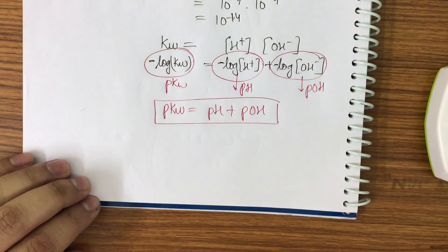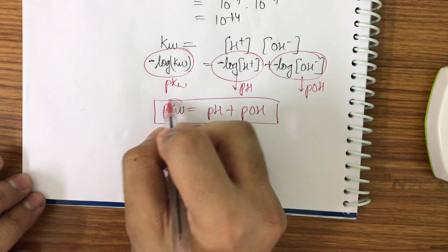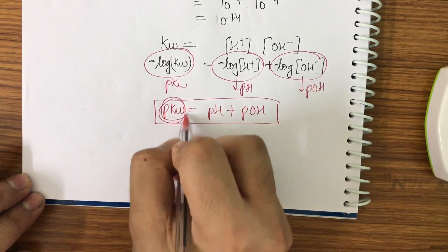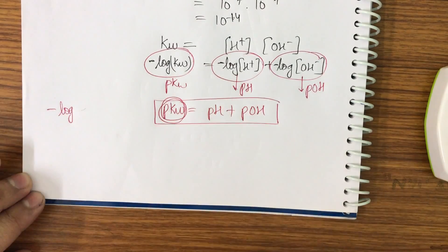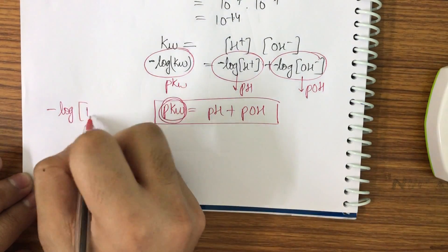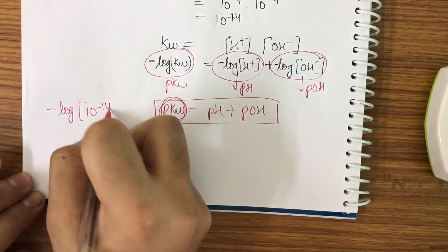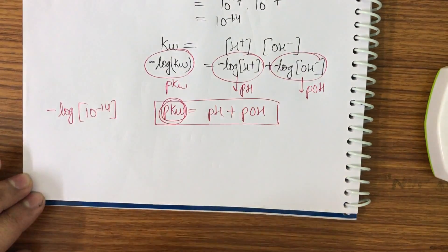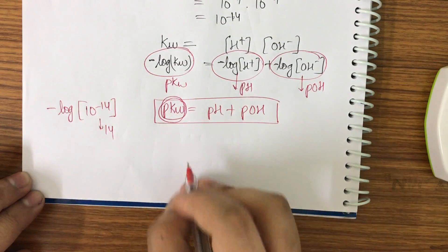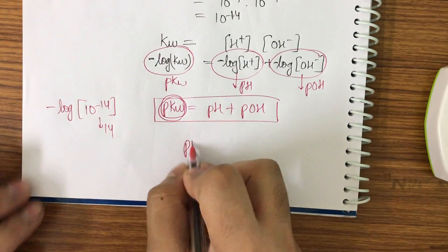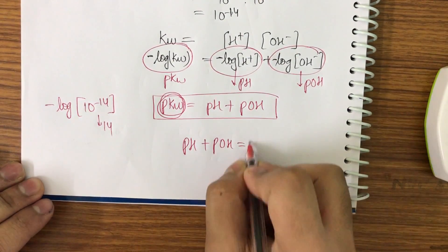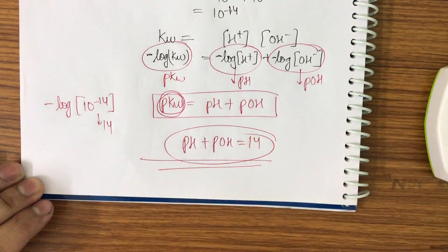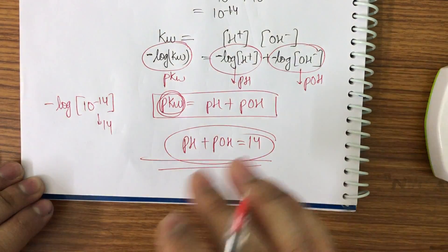Now, pKw at 25°C equals minus log of 10 to the power minus 14, which is 14. Therefore, pH plus pOH equals 14.